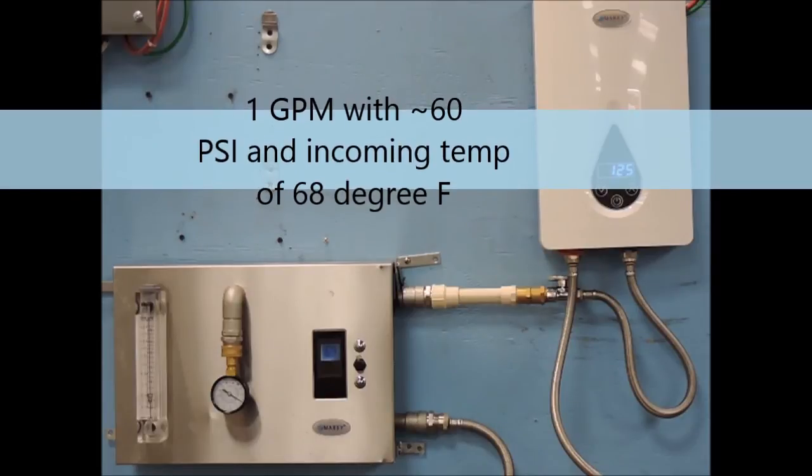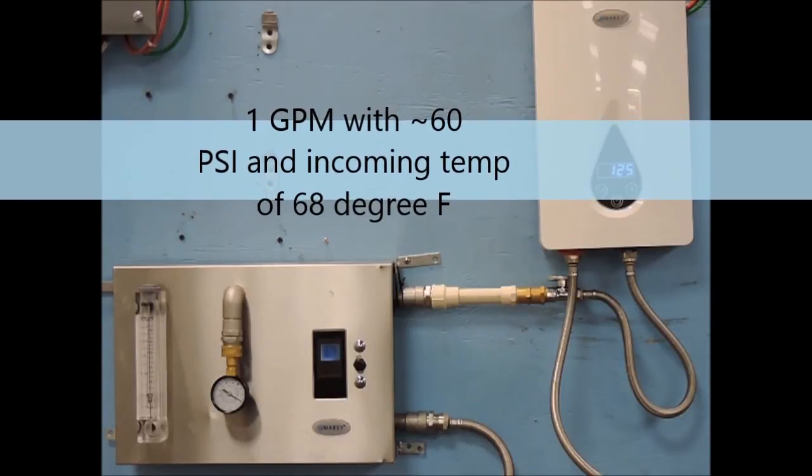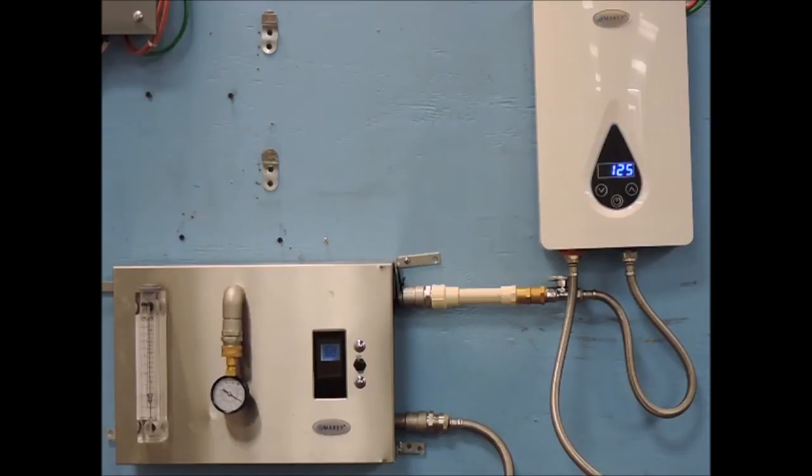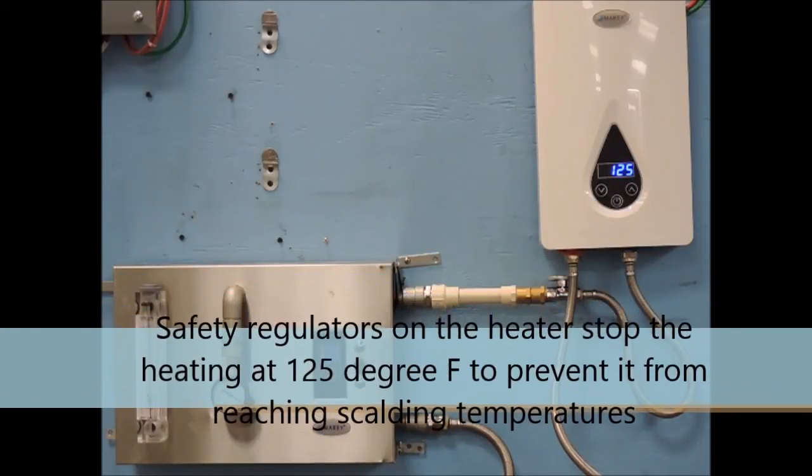Next, we bring the flow rate down to a gallon per minute, still with a psi of 60 and an incoming water temperature of 68 degrees. With these inputs, we are hitting the maximum set point for this unit, which is 125 degrees.